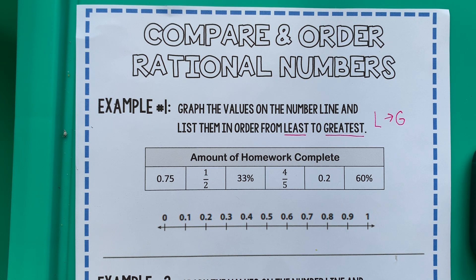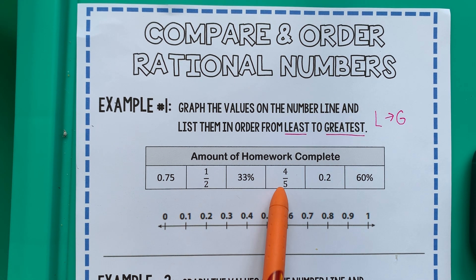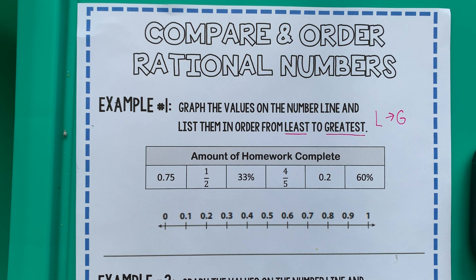If you look in the table, you see amount of homework complete, but there's all kinds of different numbers. We've got a couple of decimals, a couple of fractions, and a couple of percents. They're all positive, but they're all different kinds of numbers. As we know from the previous page in your notebook, you can convert from one to the other.